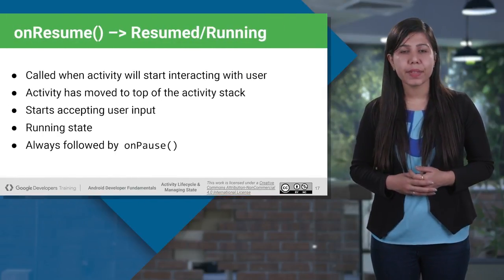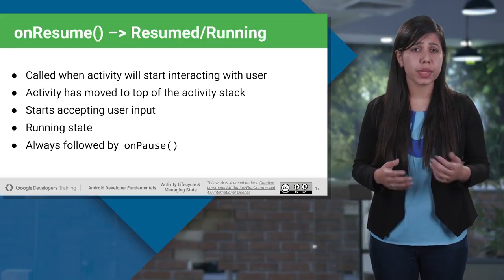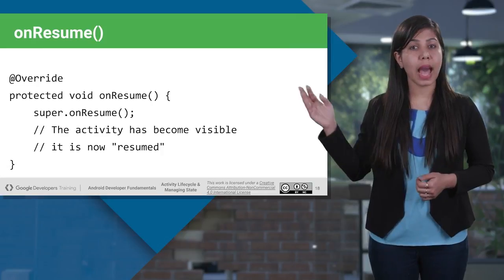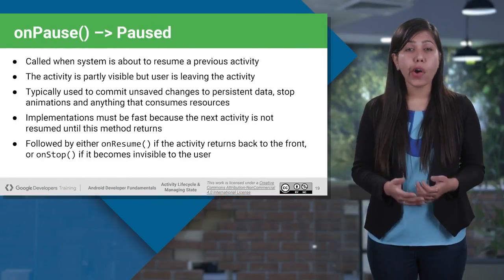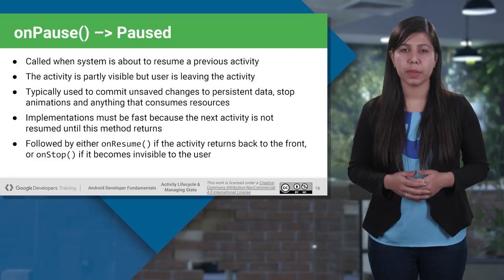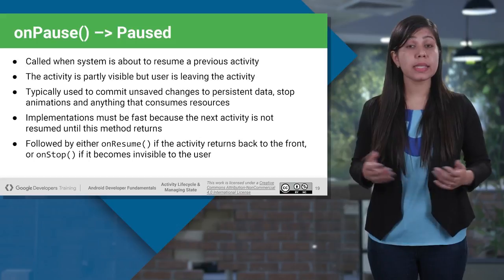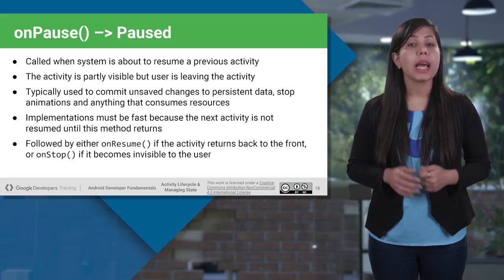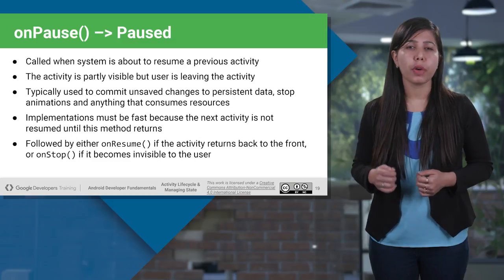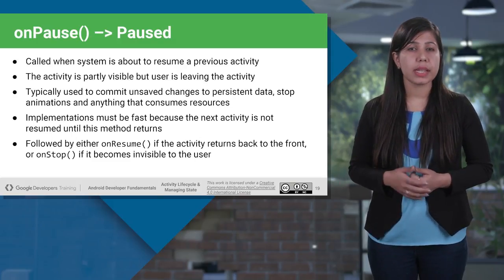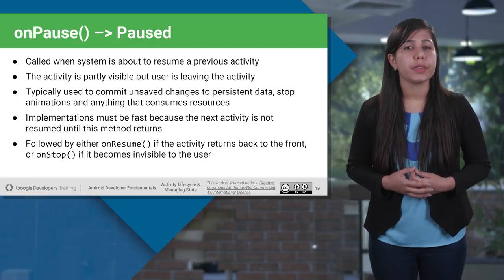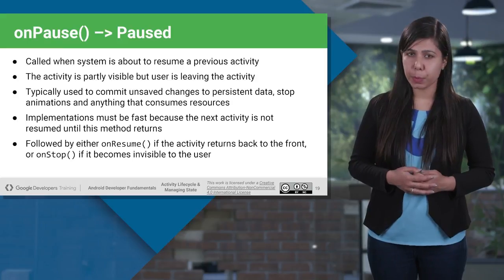On resume is where the activity starts interacting with the user and accepting user input. It has moved to the top of the activity stack and is always followed by onPause. In onPause, it could be triggered when the activity is about to resume a previous activity or is partially visible but the user is leaving. This is typically considered the best state to commit changes to persistent data, stop animations, and anything that consumes resources. The onPause implementation must be fast because the next activity is not resumed until this method returns. It is either followed by onResume if the activity returns to the front, or onStop if the activity is becoming invisible.